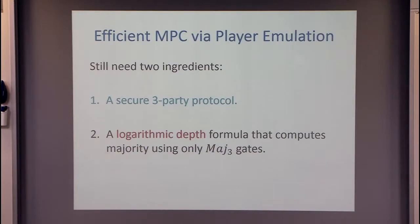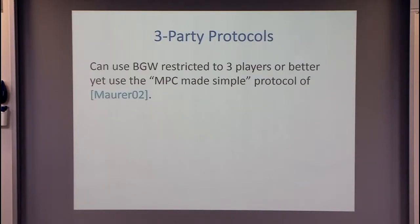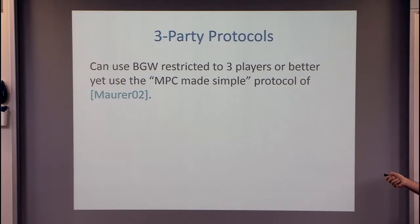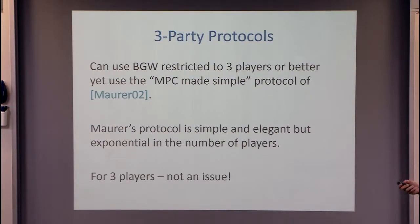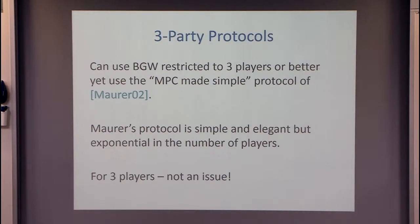For the secure three-party protocol, we could use BGW restricted to three players — already simpler than the full BGW. But we can do better: there's a beautiful protocol by Maurer called MPC Made Simple. It is indeed very simple. Its major downside is that you pay exponentially in the number of players, but here we only need it for three players, so exponential in three is acceptable. This really shows the benefit of reducing from N parties to three: you can use protocols with very large dependence on the number of players.